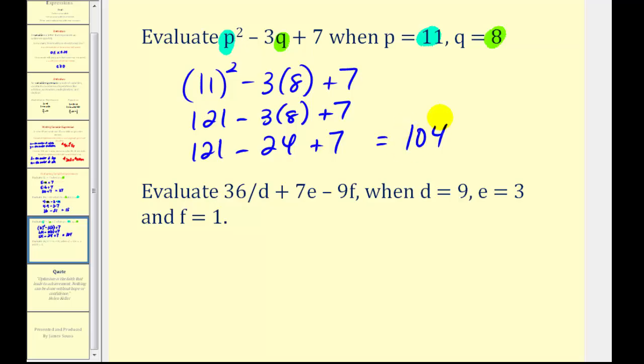In our last example, we have 36 divided by d plus 7e minus 9f when d equals 9, e equals 3, and f equals 1. So again we'll substitute 9 for d, 3 for e, and 1 for f.